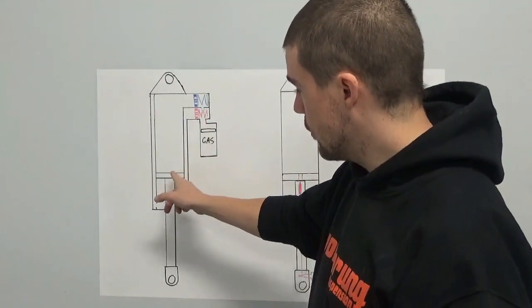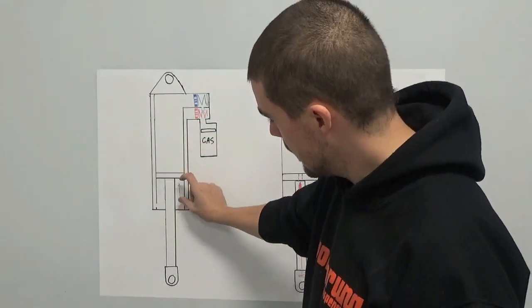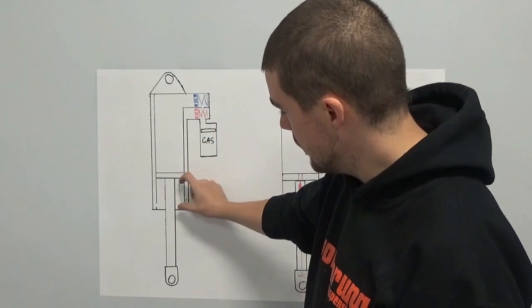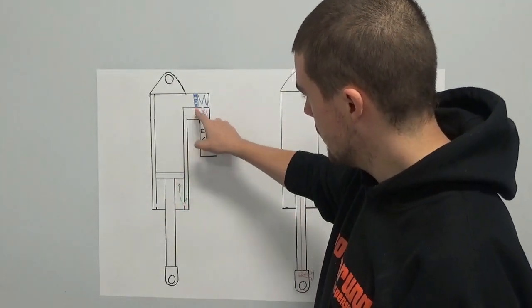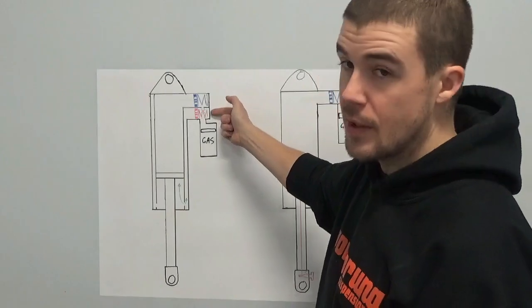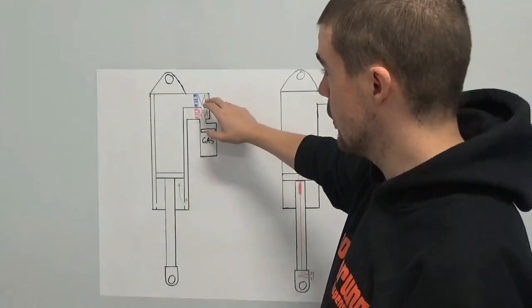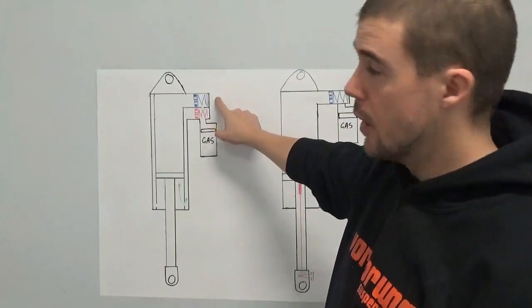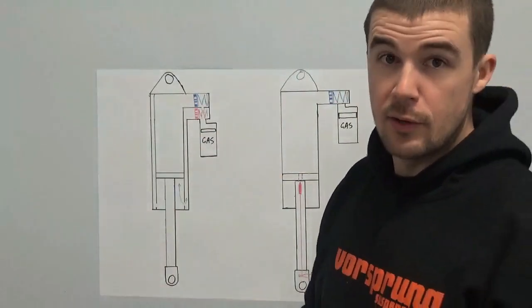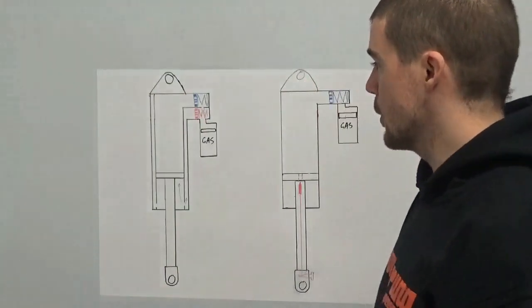In rebound, the opposite is happening. Things extending, that oil in there is either being forced through the piston or it's coming up and being forced through this rebound adjuster up here. The way that I've drawn these is blue is compression, red is rebound. Seems to be standard nomenclature for some reason in the bike world.